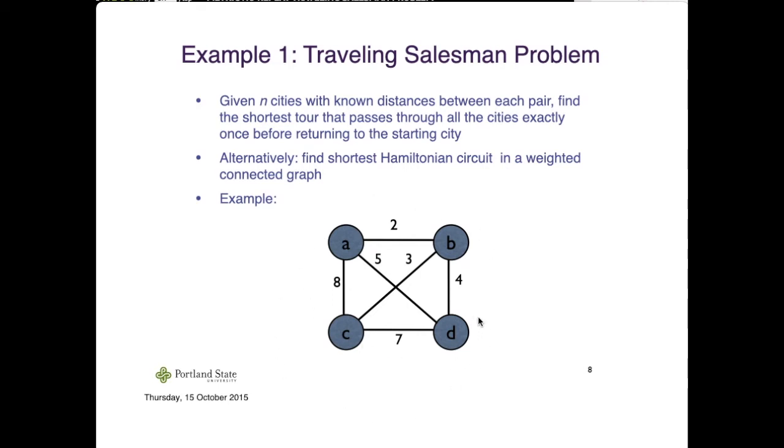Equivalently, this is the problem where we find the shortest Hamiltonian circuit in a weighted connected graph. This example is an undirected graph, but sometimes the route going from A to C isn't necessarily equal to the weight of the edge connecting C to A. Sometimes it's represented using a directed graph. In this example, it's an undirected graph, so it's simpler.